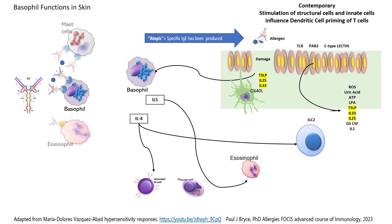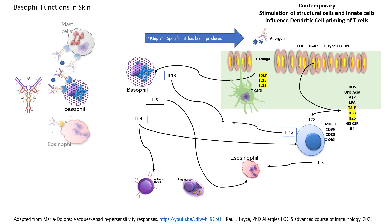In addition, the interleukin-4 will stimulate the innate lymphoid cells type 2, which were also activated by those mediators from the epithelium. These activated cells will produce interleukin-5, which further stimulates the eosinophils, but they also produce interleukin-13. That's also a product of basophil activation, and they both will stimulate further proliferation of Th2 responses. So it is complex.